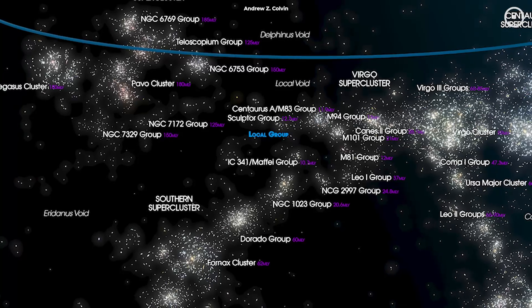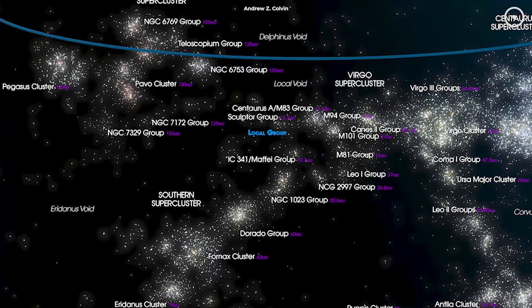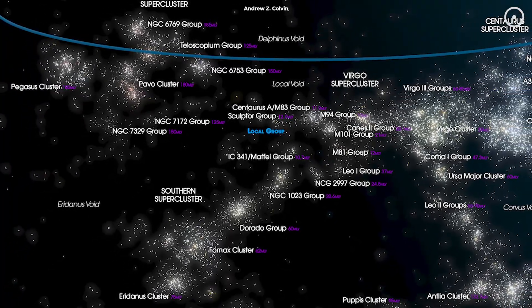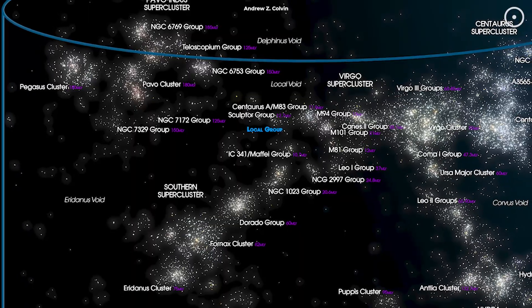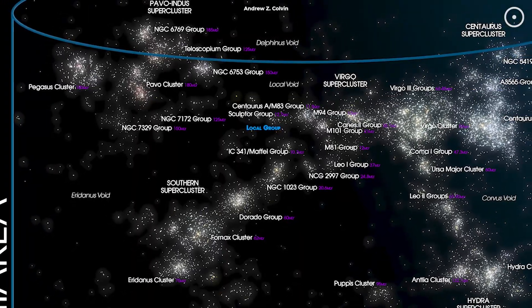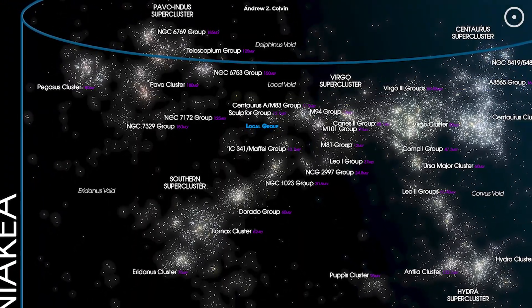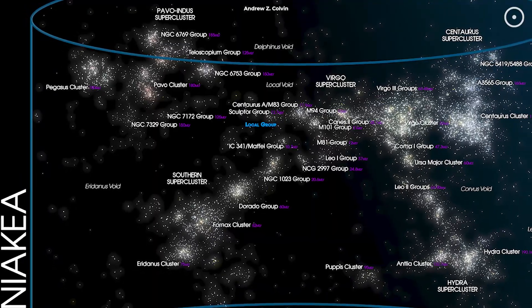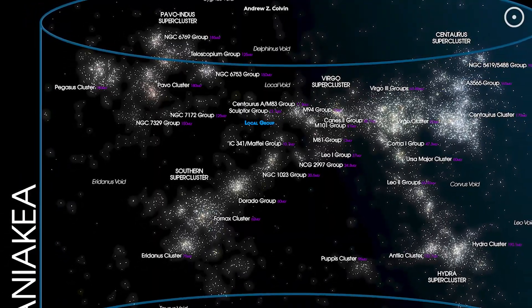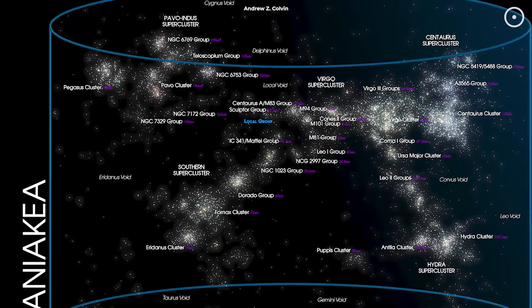For years, astronomers thought this was it. We'd finally mapped our cosmic neighborhood. Case closed, right? Wrong. Because something wasn't adding up. The way galaxies were moving, it suggested something else was out there. Something even bigger than Laniakea.